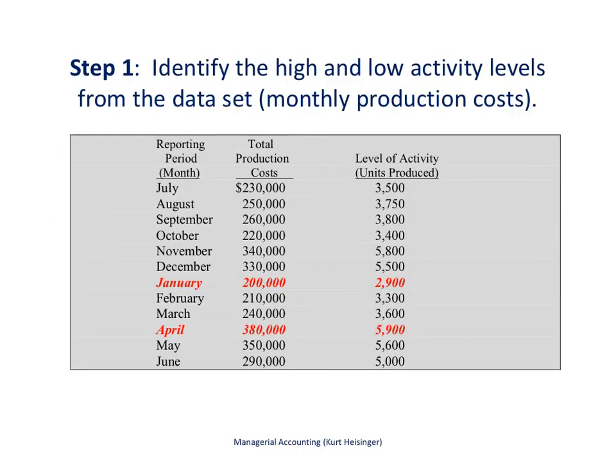What we have here is the information we need to perform step 1. That is, we are looking at in this example total production costs by month, and it looks like we have July through June, and the level of activity is the number of units produced for each month. Remember step 1 is to identify the high and the low level of activity, and you see that in red in this chart. January shows that we have a low of 2,900 units produced for the data set that we are looking at.